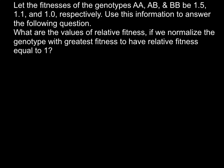When we deal with relative fitness, we always bring all the numbers to a scale between 0 and 1. As you can see, our absolute numbers are greater than 1 — for example, for genotype AA we have 1.5, for AB we have 1.1, and BB is 1.0. We have to bring them to be between 0 and 1 while preserving all the relationships between them. To do this, we find the genotype with the greatest fitness value.